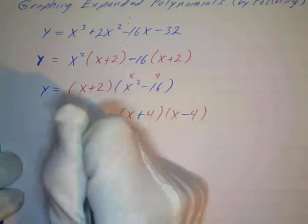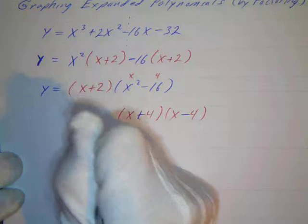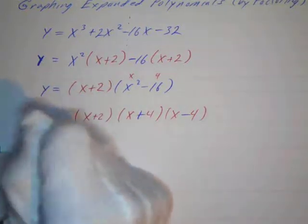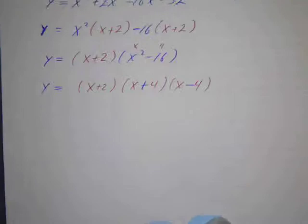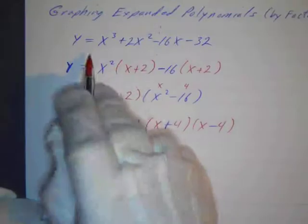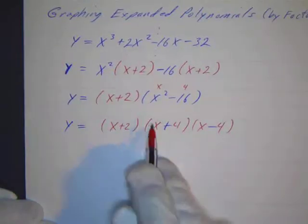And then I'll bring down my x plus 2 factor, and there's my polynomial in factored form, which is nice, a lot easier. Now what's my end behavior going to be? Well, my end behavior, all we have to do is look at the, we can add every exponent, you still have three.